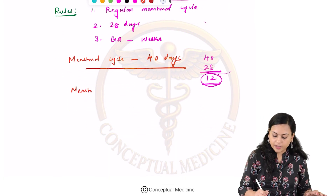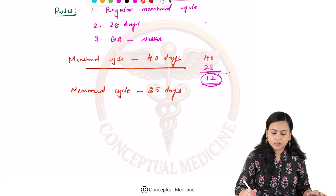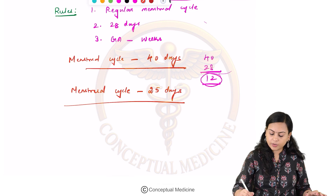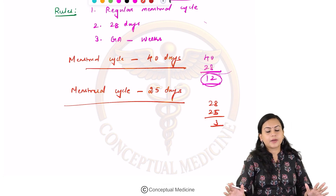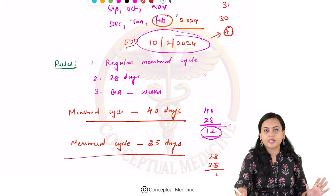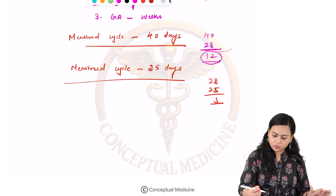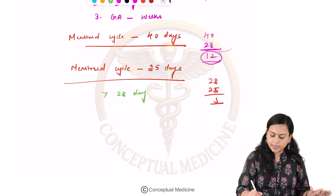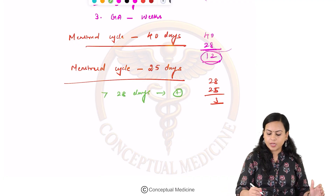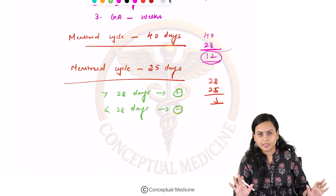Similarly, if the woman gets her cycle every 25 days, that is 3 days less than 28. So subtract 3 days from the expected date of delivery. In summary: if it is a longer cycle, add the number of extra days; if it is a shorter cycle, subtract the number of days. More than 28 days — add the days; less than 28 days — reduce the days from the calculated EDD.